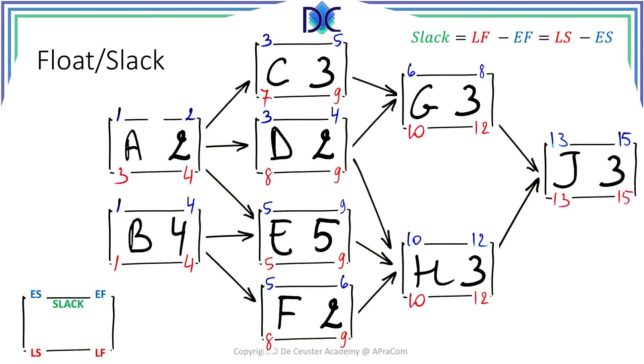So let's have a look at the float or slack. This is the diagram with all the numbers we found at the end of the last session. Now we are interested in the green numbers which are indicating the slack or float of those activities. The formula on the top right defines the calculation: slack equals late finish minus early finish, or equals late start minus early start.